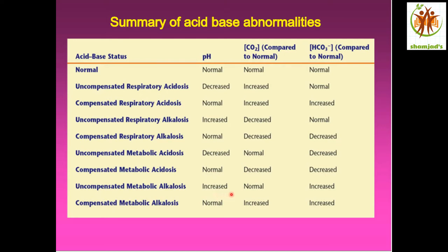Uncompensated metabolic alkalosis: the pH is still increased (uncompensated), the CO2 is normal (not compensated), and bicarbonate is increased — that is why it is metabolic alkalosis. In compensated metabolic alkalosis, the pH value remains normal. The CO2 is increased because of the compensatory response, and the bicarbonate is increased because of the metabolic alkalosis.